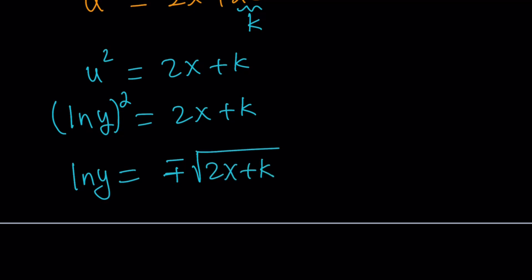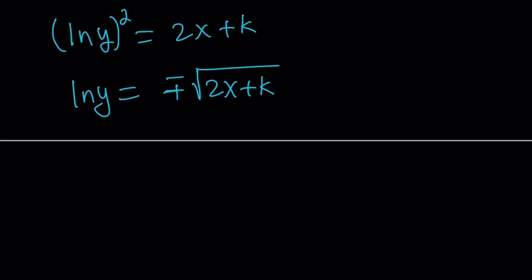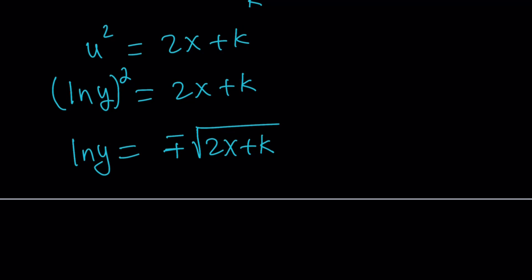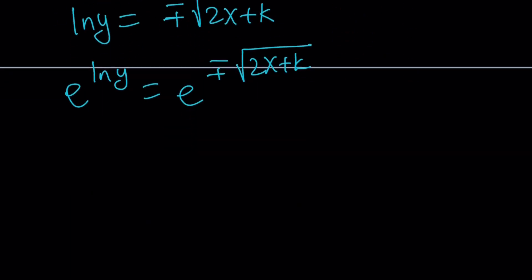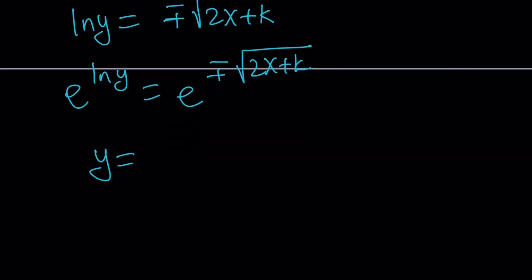We were trying to solve for y, but we ended up with ln y. Let's go ahead and turn this into y. How do you turn ln y into y? It is by using the base e. In other words, e to the power ln y is y. So let's e to the power both sides. This is going to give you y equals e to the power plus minus the square root of 2x plus k.